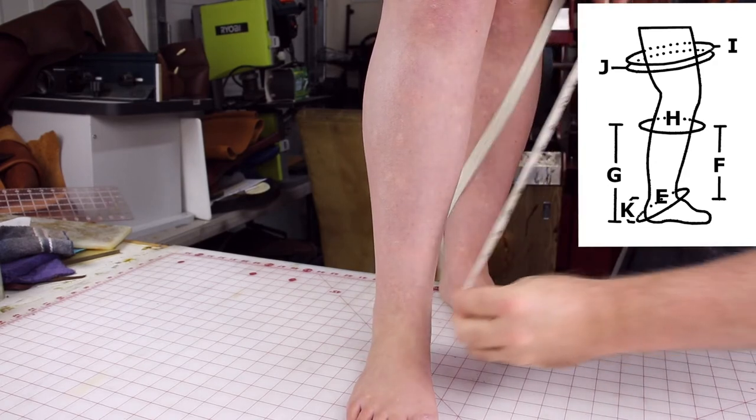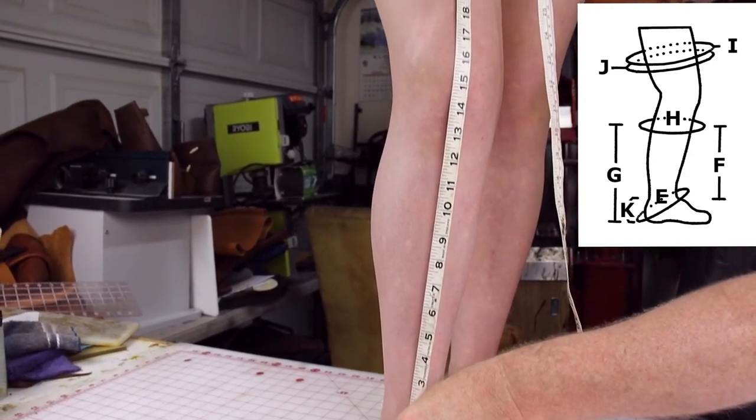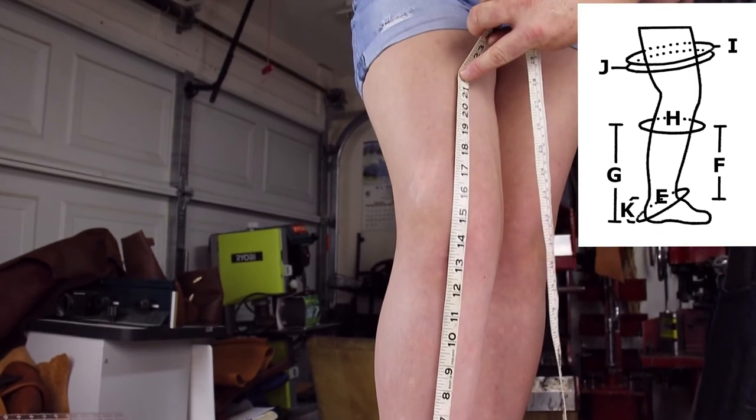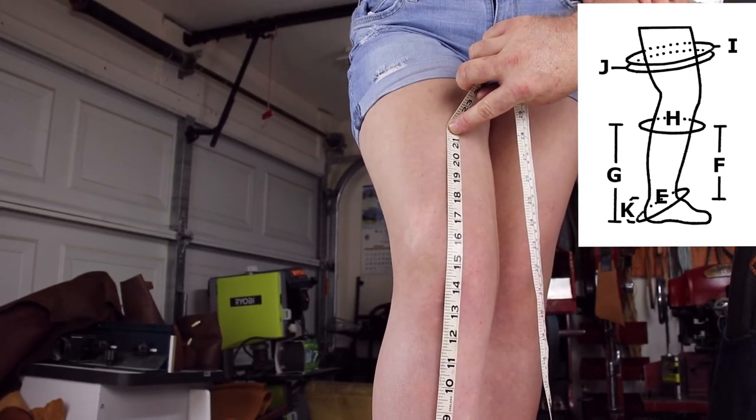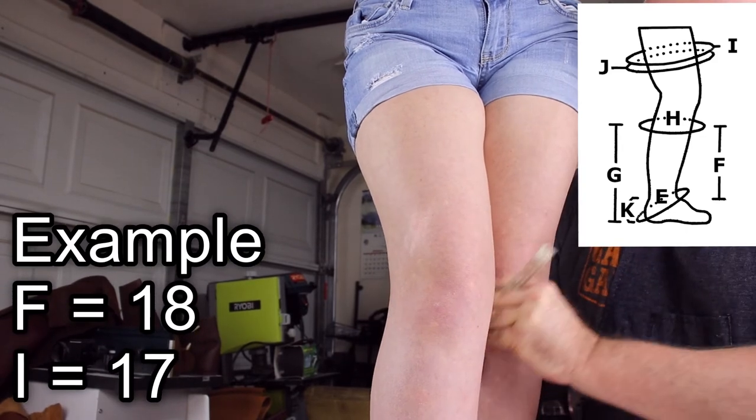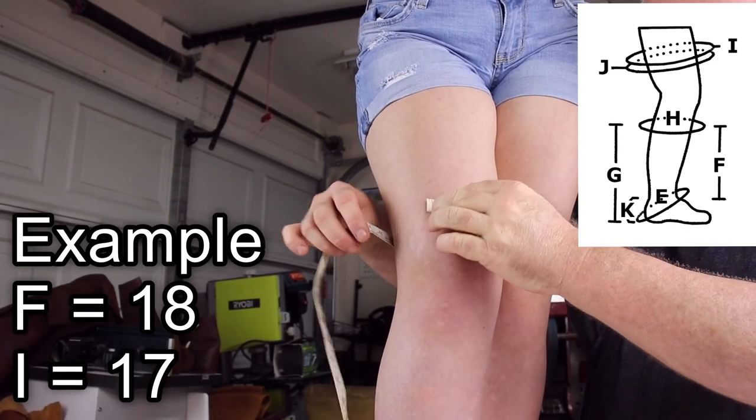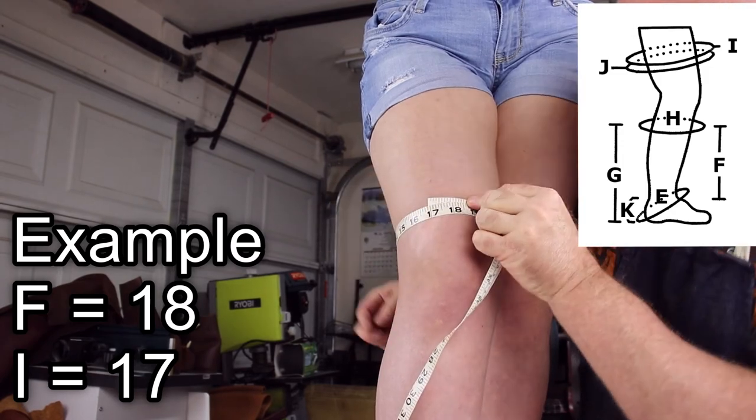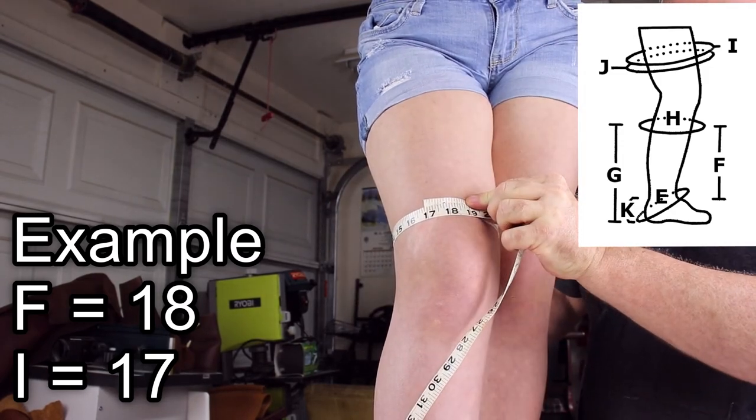If the customer wants an above the knee boot, I see that above the knee boot, when holding my tape here, we see a good spot at being 18 inches. So I will take a circumference with F equals 18. Her I measurement equals 17.